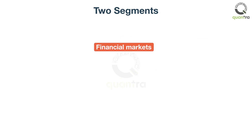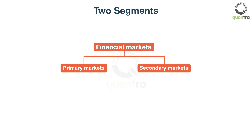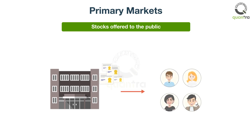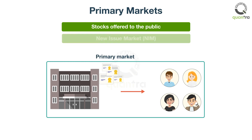As you learned in the previous units, financial markets are markets where financial instruments such as stocks and bonds are bought and sold. These markets are primarily made of two segments: primary markets and secondary markets. A primary market is a market where stocks are offered for the first time to the public by the issuing corporations. A primary market is also known as the new issue market, NIM.